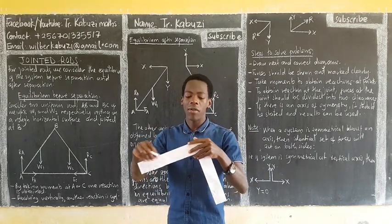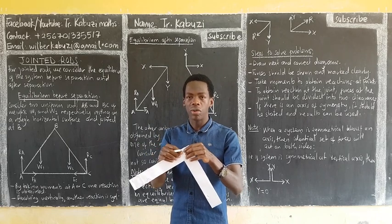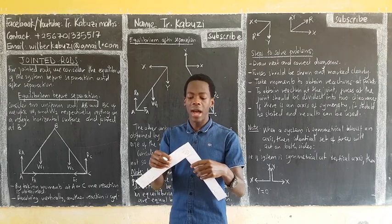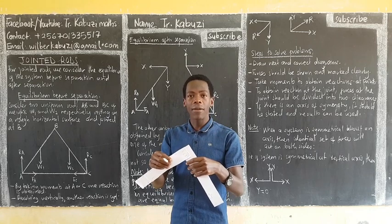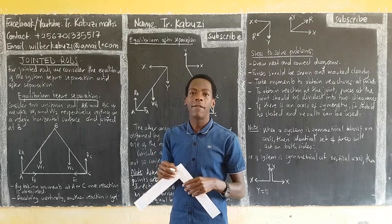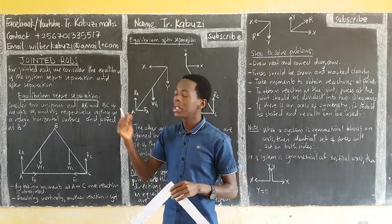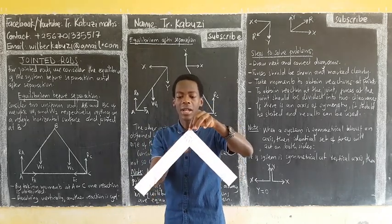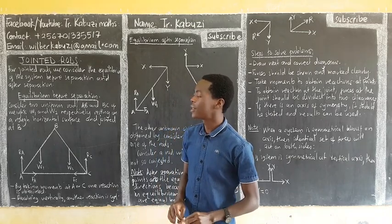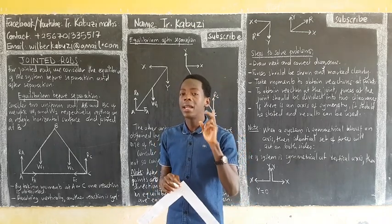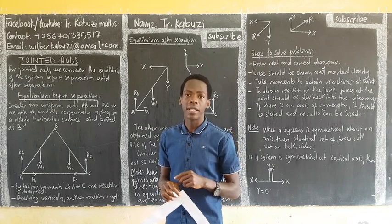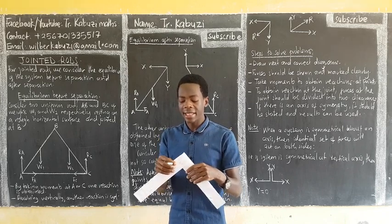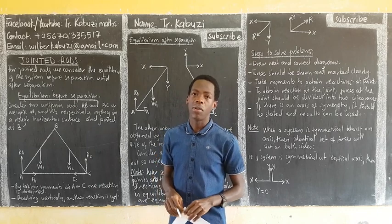Here we have one rod and another rod. When we join these two, we use a pin to form a joint. If after forming this body, external forces are not going to change the shape of the body, it means we are forming a jointed rigid body — or jointed rods. They are jointed in that you combine two or more rods to form one thing. So these are all jointed rods. As long as they are connected by a joint, that is what we call jointed rods.